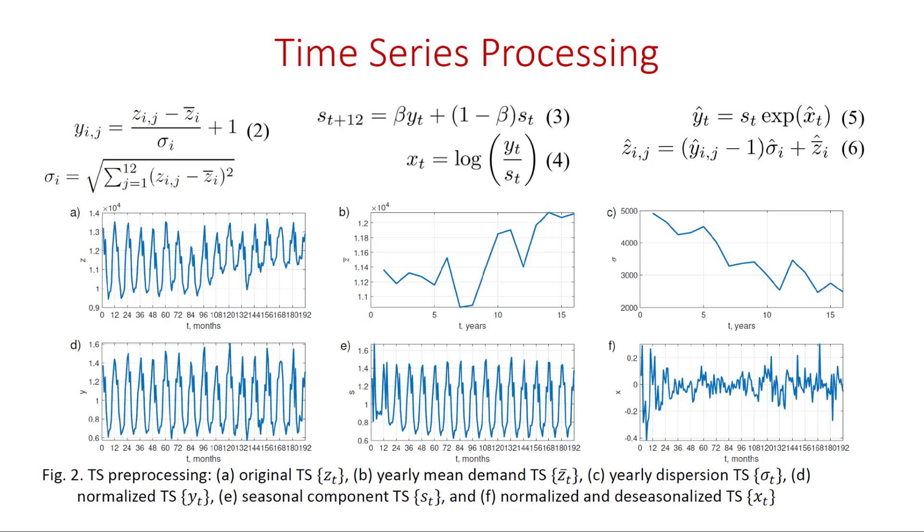The normalized time series is further deseasonalized. To do so we use a simple Holt-Winter's multiplicative seasonal model with only one component. See equation 3 where ST is the seasonal component at time point t and beta is a smoothing coefficient. The seasonal component is shown in figure 2e. It is used for deseasonalization during the on-the-fly preprocessing. This is expressed by equation 4. To limit the impact of outliers on the forecasts a squashing function logarithm is applied.